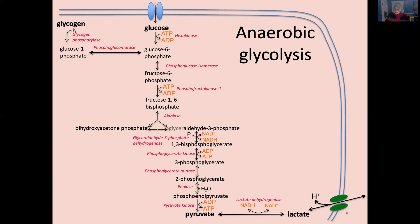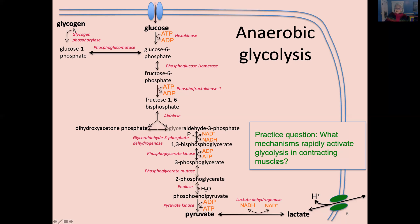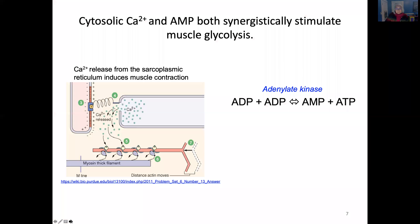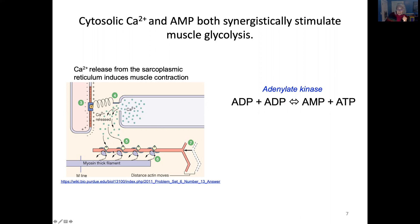Practice question: What mechanisms rapidly activate glycolysis in contracting muscles? Calcium and AMP are two small molecule activators produced in the cytosol during muscle contraction that also activate glycolysis. Muscle contraction causes calcium to be released from the sarcoplasmic reticulum; it is used in contraction but also activates glycolysis. Muscle contraction produces lots of ADP, and the enzyme adenylate kinase takes ADP to make AMP and ATP. This AMP — adenosine monophosphate — also activates glycolysis.